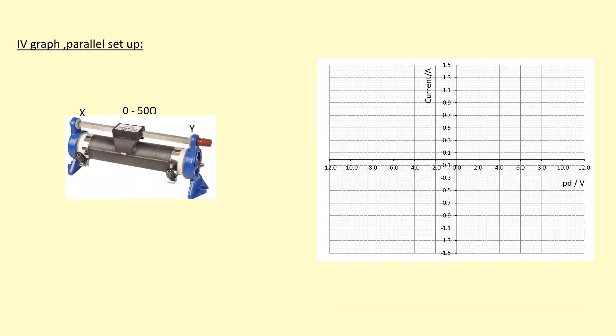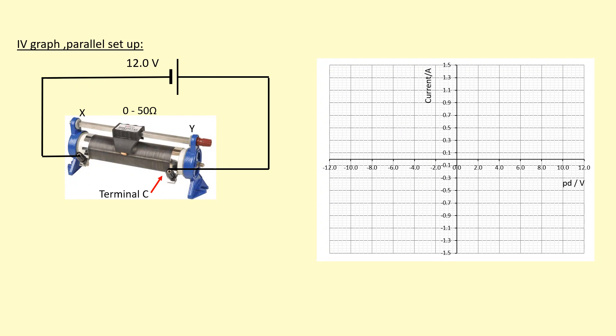First, I'm going to connect the power supply to terminal C and the other terminal at the other end, so it's connected across the whole rheostat. Then I'll use the terminal with the sliding contact and connect it like this. Once I've connected the voltmeter and ammeter parallel to the 10-ohm resistor, this will allow me to measure the whole IV characteristic.